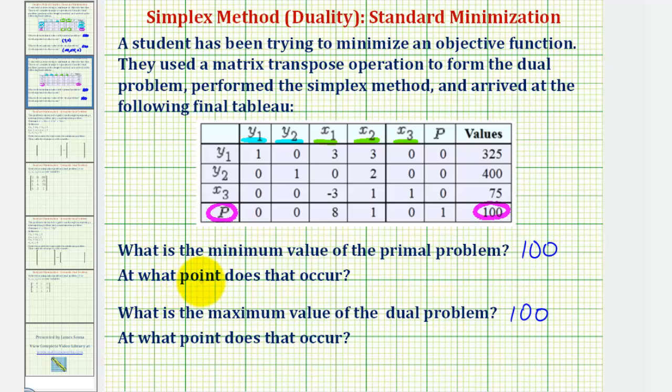And now to determine where the minimum value of the primal problem occurs, we look at the last entry in the columns associated with the slack variables. So x sub 1 equals 8, x sub 2 equals 1, and x sub 3 equals 0.